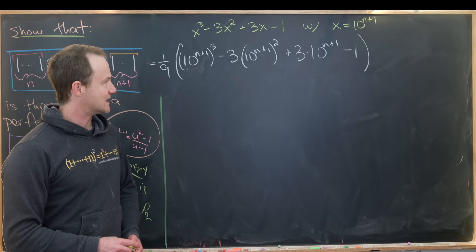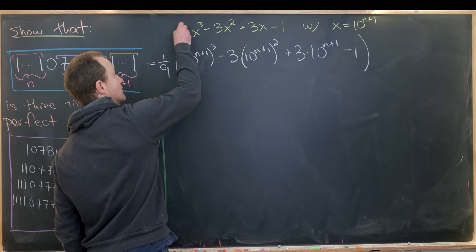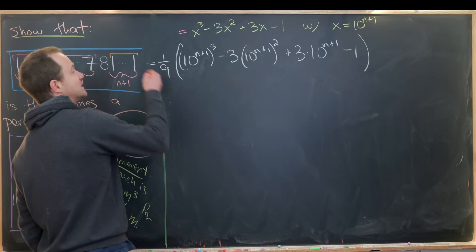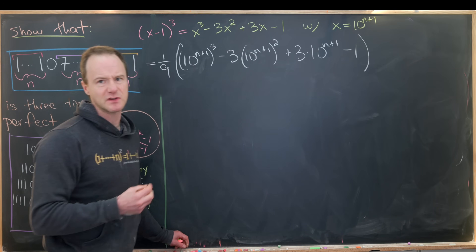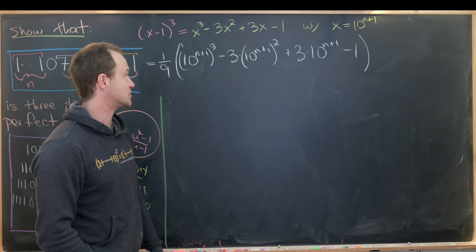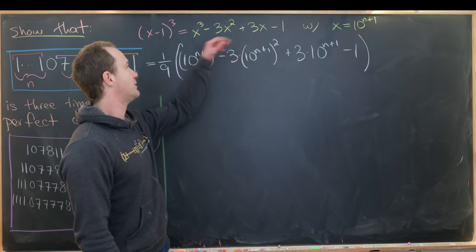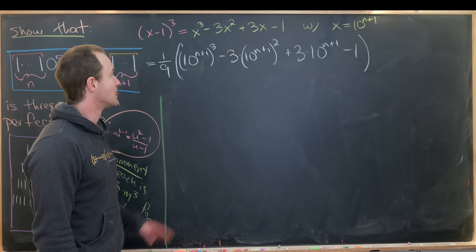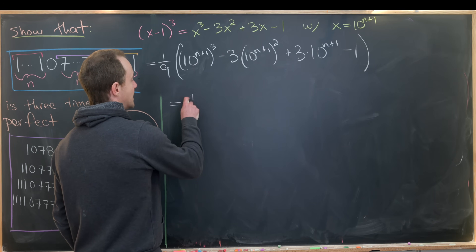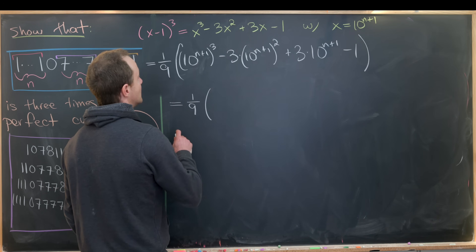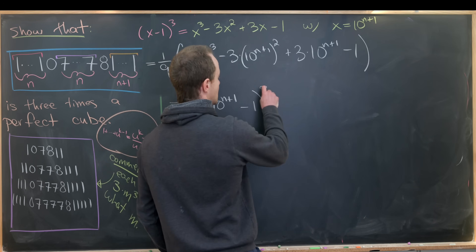That's nice, but what's really nice is that this polynomial has a well-known factorization. It's equal to the quantity x minus one, cubed. You can see that by multiplying it out longhand or by the binomial expansion — the coefficients three and three are three-choose-one and three-choose-two, picking up a minus sign. So we can write the entire thing as one over nine times ten to the n plus one minus one, quantity cubed.